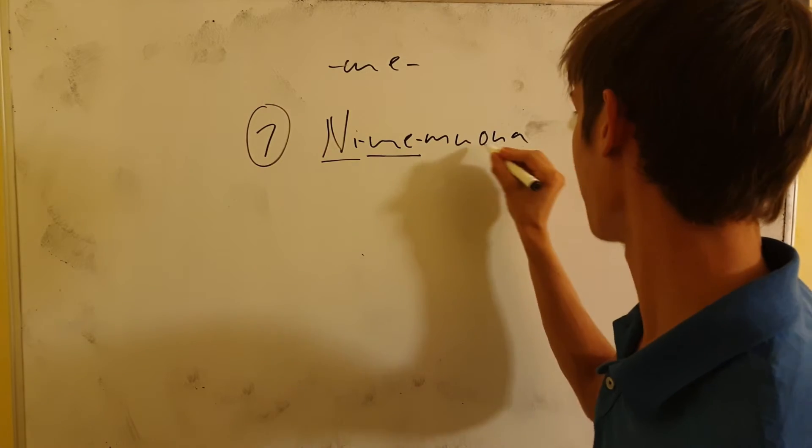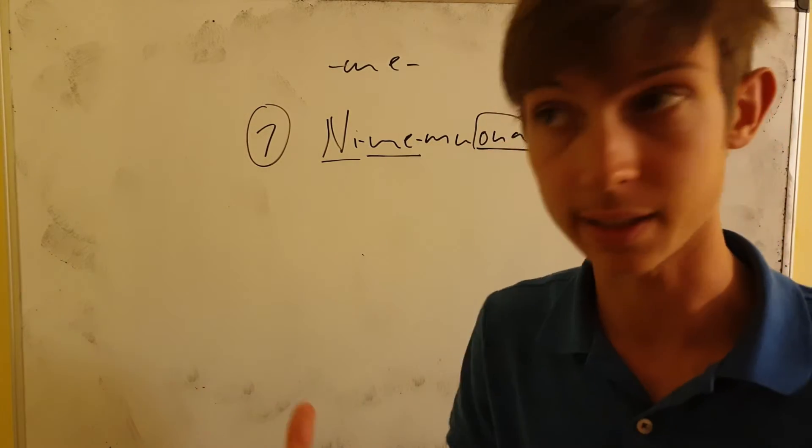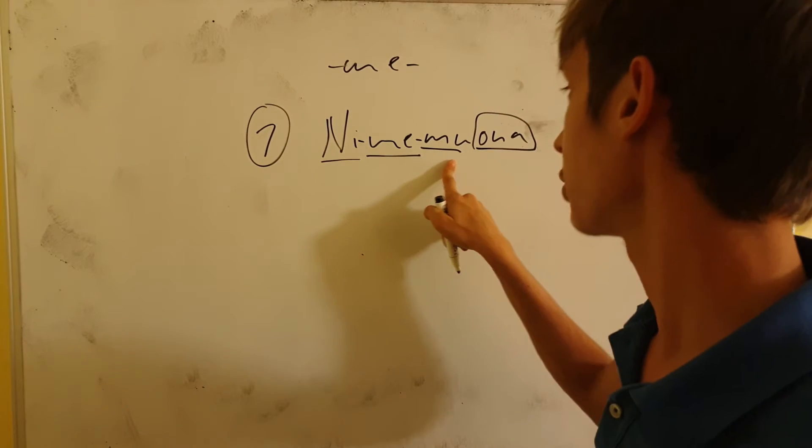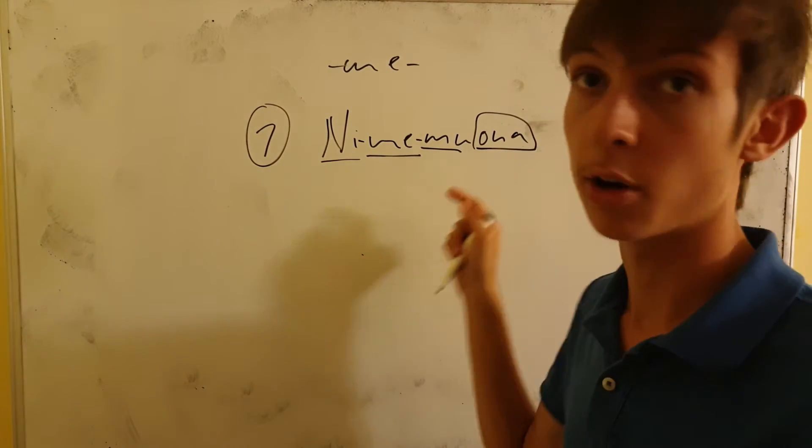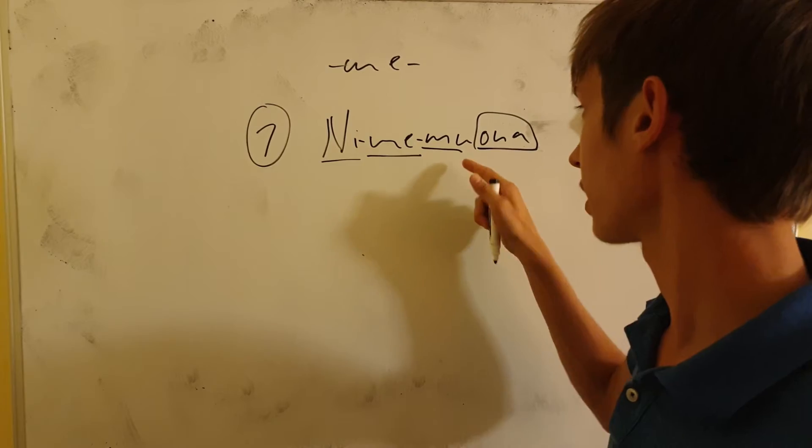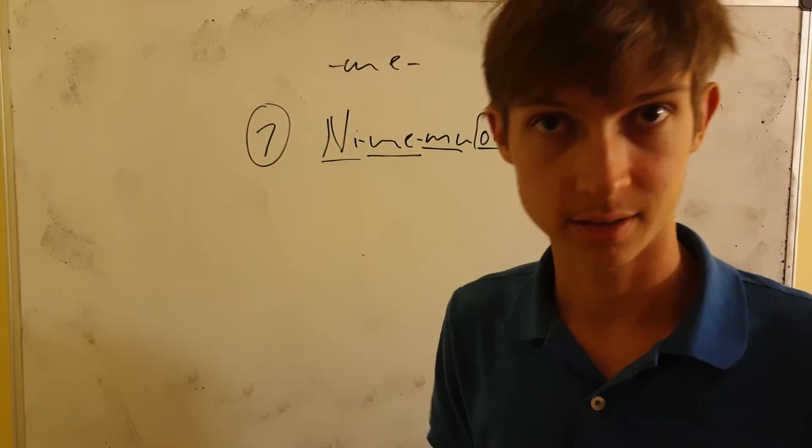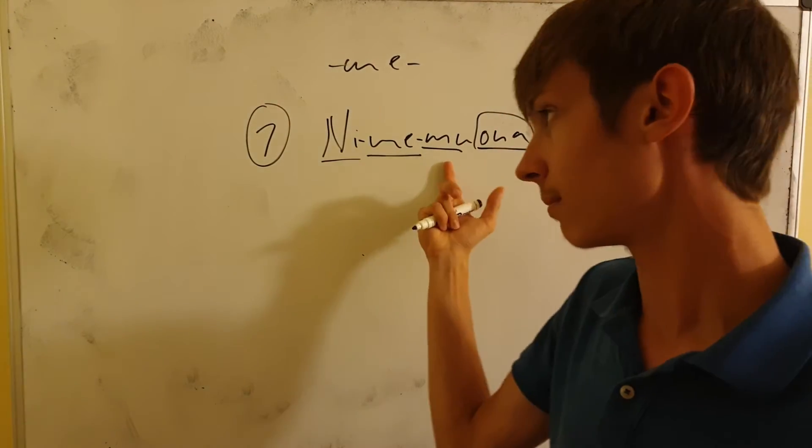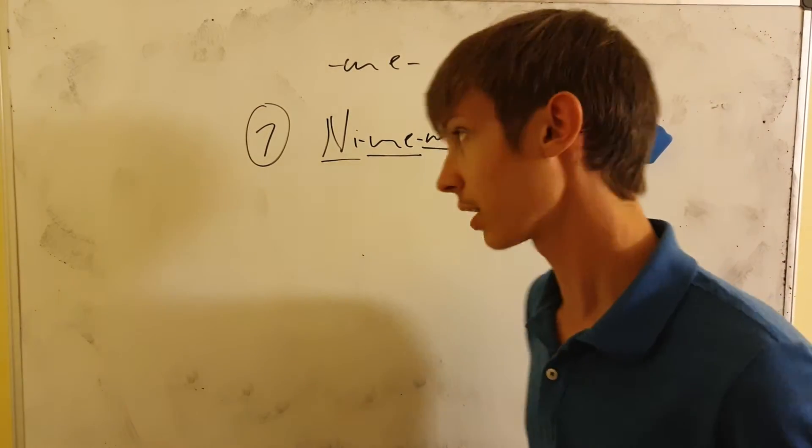And this is the verb, ona, which means see. And this is the object particle which goes between the tense particle and right before the verb particle. So you see, right before the verb particle, we have this object particle, which is mu.